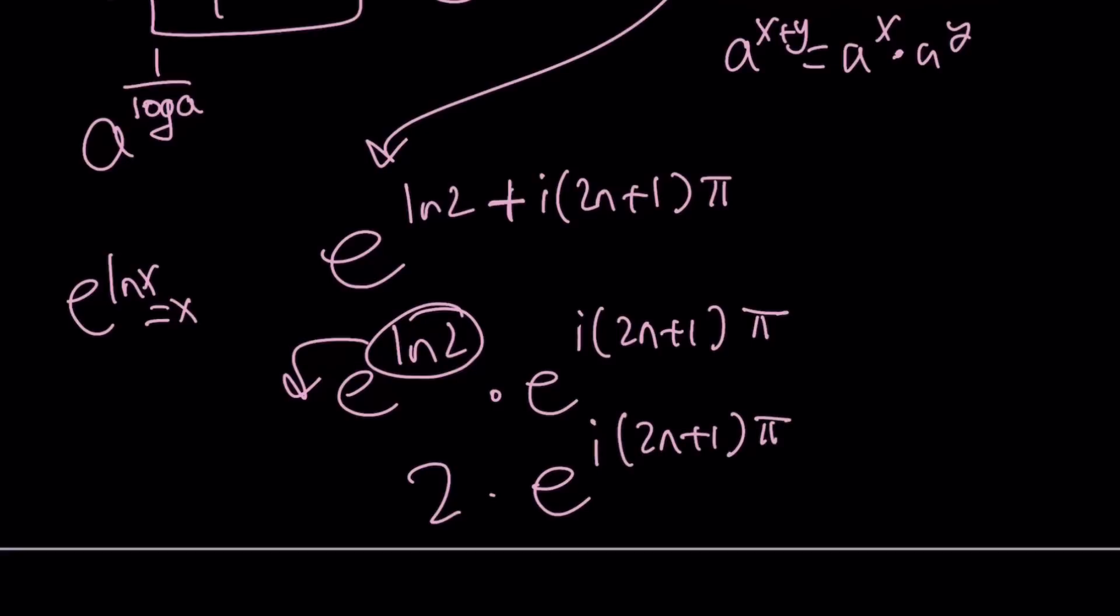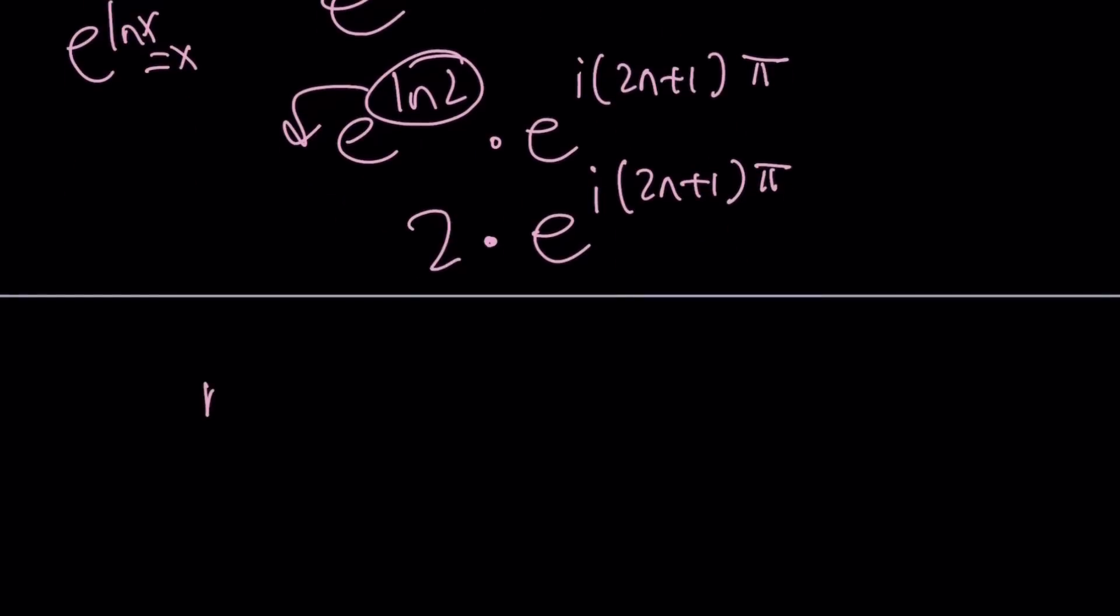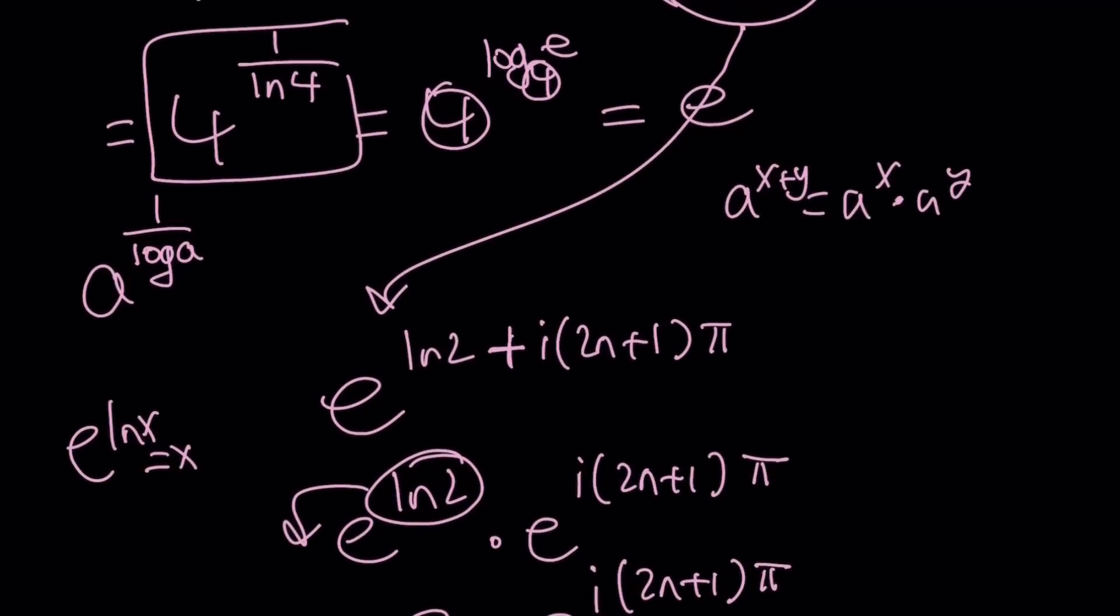So that becomes a 2 times e to the power i 2n plus 1 pi. Now, what is that supposed to mean? It means if you have n equals 0, you're going to get 2 times e to the power i pi. But e to the power i pi is negative 1, as you know. So this is going to become negative 2. And obviously, there are infinitely many values for which this equation is true.